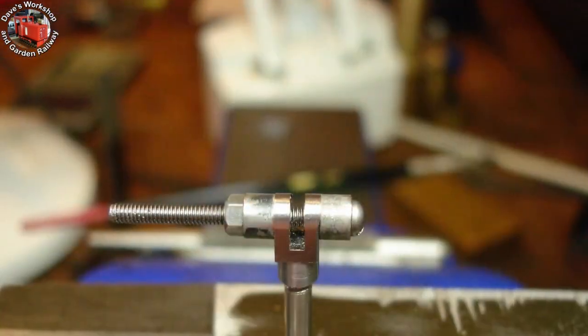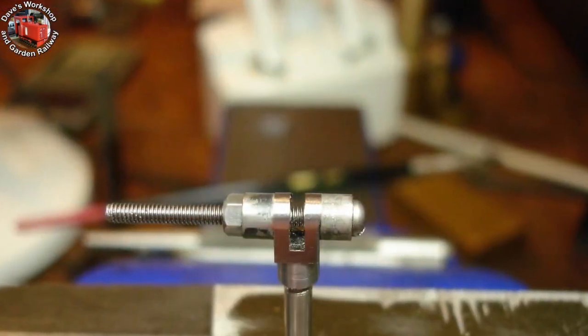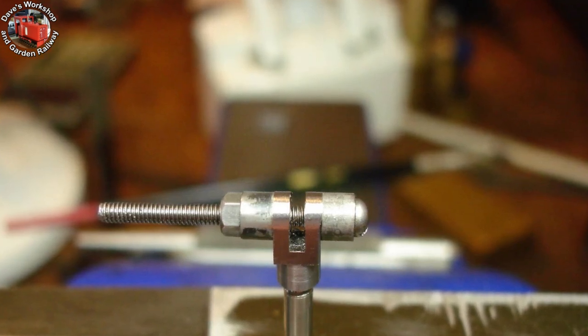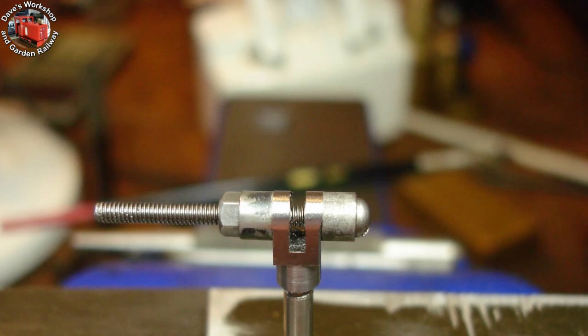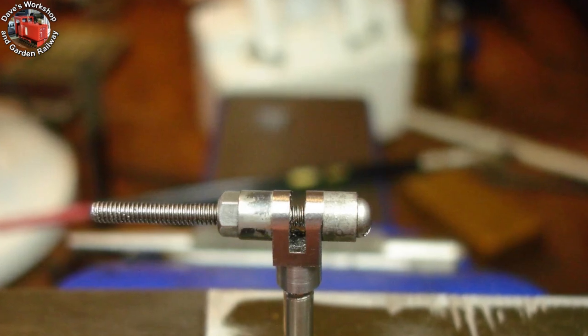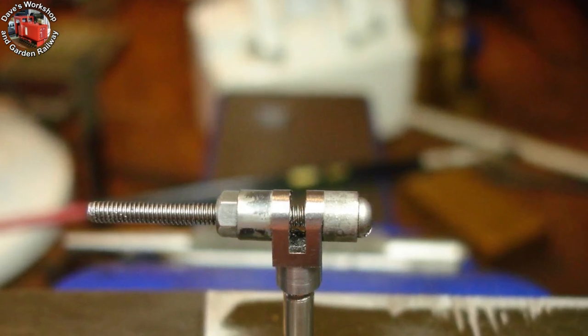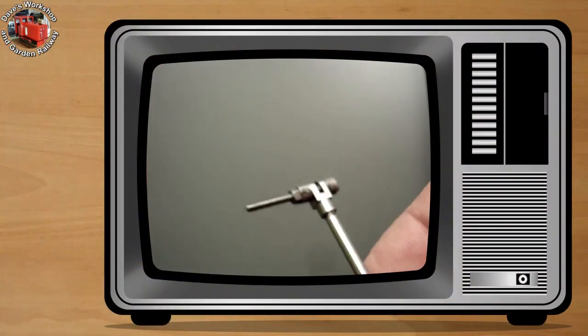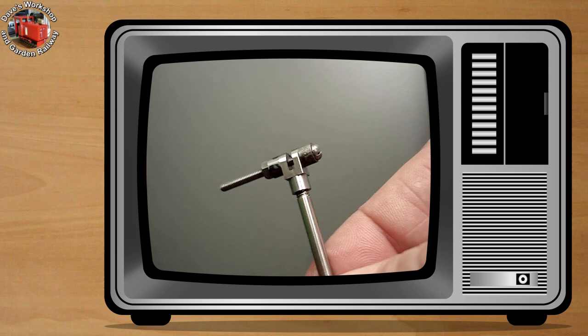I've just radiused the ends using the new 3/16th diameter filing buttons. Prior to this, the assembly was mounted in the vertical slide for cross drilling. Drilled and tapped 8BA on one side, and drilled 2.2 mil on the other. The first part of the valve gear completed.